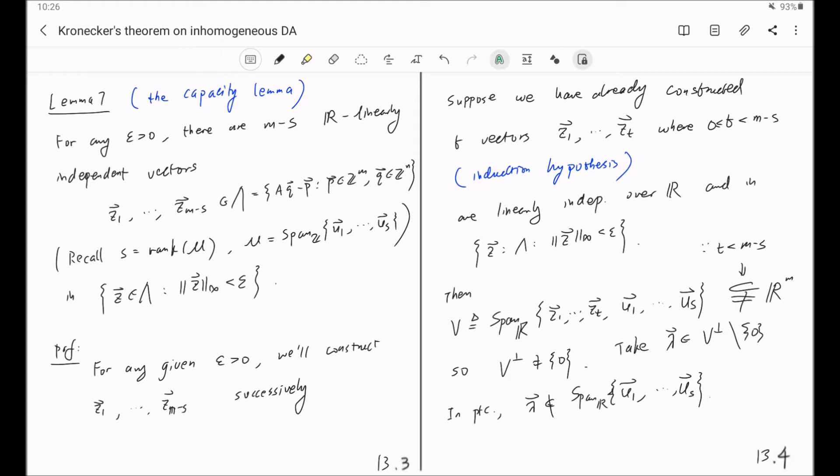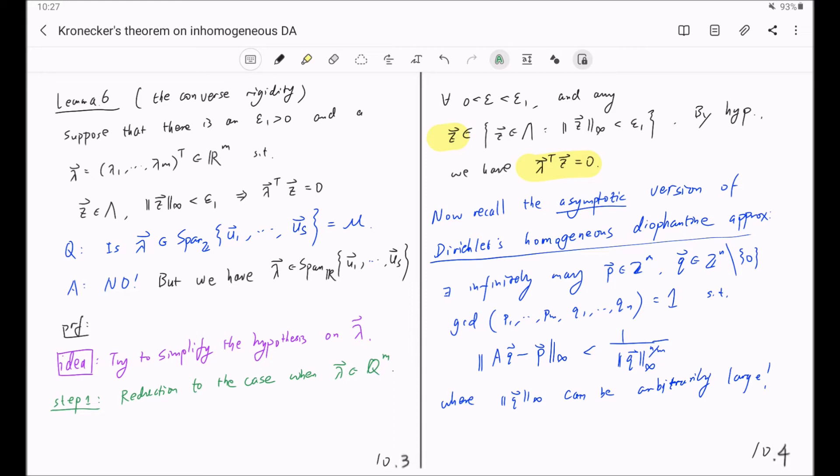We do all of these just to invoke lemma 6. What we want to use is a contrapositive of lemma 6. And in particular, we need a negation of this part to get the linear independence. That is the idea that we are following here.